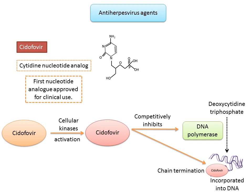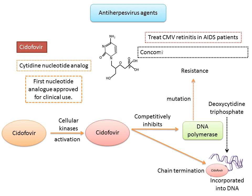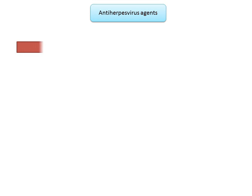Unlike nucleoside analogs such as acyclovir and ganciclovir, cidofovir is not phosphorylated by a viral kinase — it is activated by cellular kinase only. Cidofovir resistance in CMV is due to mutations in the viral DNA polymerase. Low-level resistance develops in up to 30% of retinitis patients by three months of therapy. It is employed almost exclusively to treat cytomegalovirus retinitis in AIDS patients. Concomitant oral probenecid and saline hydration reduce the risk of renal toxicity, as nephrotoxicity is the principal dose-limiting side effect of intravenous cidofovir.